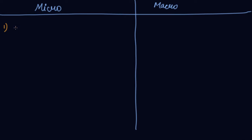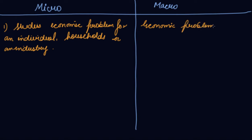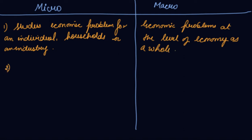Difference number one: microeconomics studies economic problems for an individual, household, or industry. When you are studying economic problems at the level of the economy as a whole, then it is your macroeconomics.